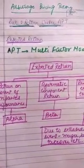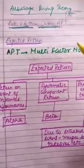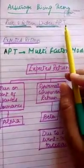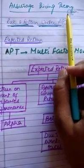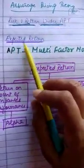Good morning students, our today's topic is risk and return under APT. APT means Arbitrage Pricing Theory. We have already discussed its meaning and assumptions. Next is how to calculate the expected return under the APT model.